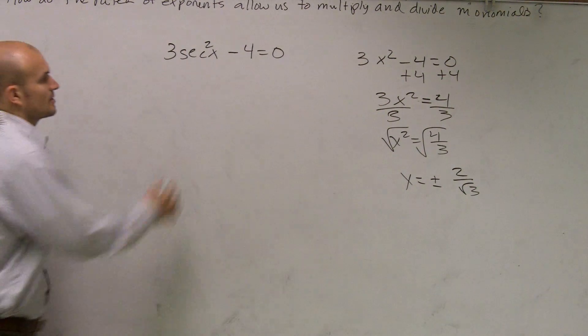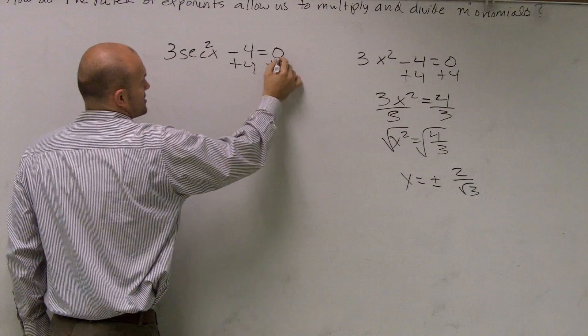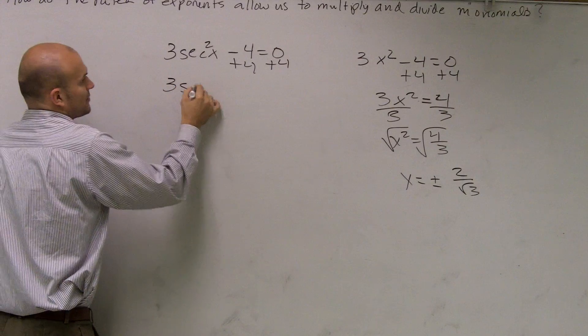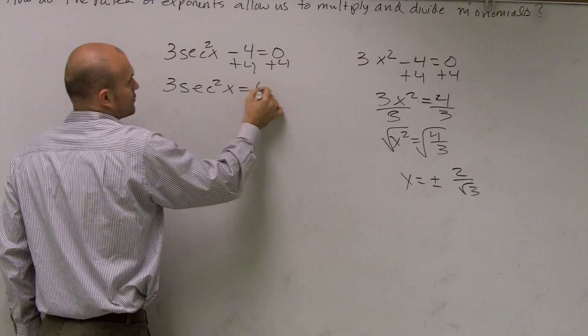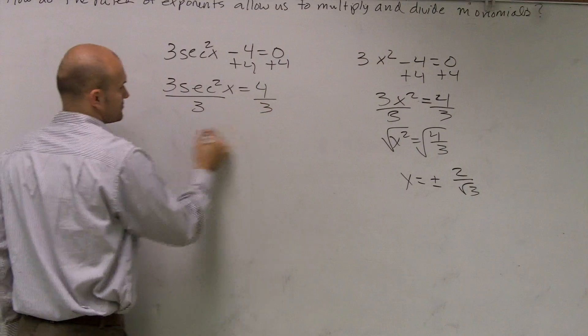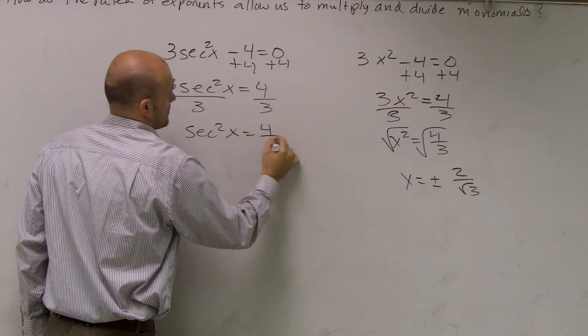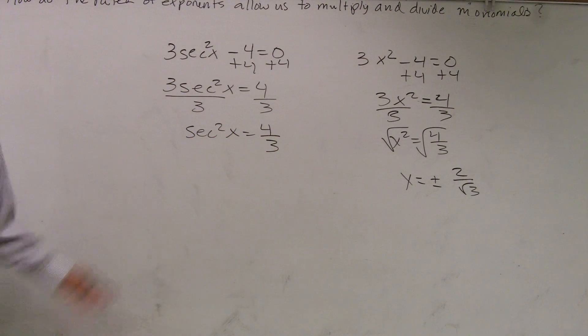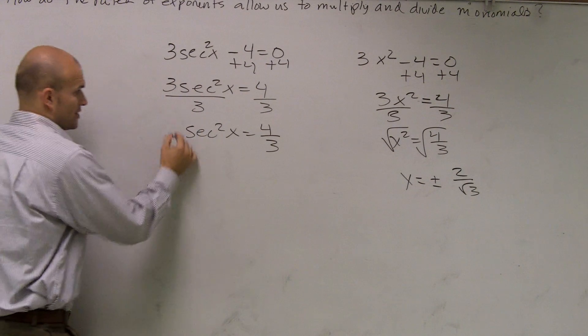So if I'm going to solve this, I'm going to do the exact same operations. I'm going to add 4, and I get 3 secant squared of x equals 4. Divide by 3. All right, to get rid of the squared, I take the square root.